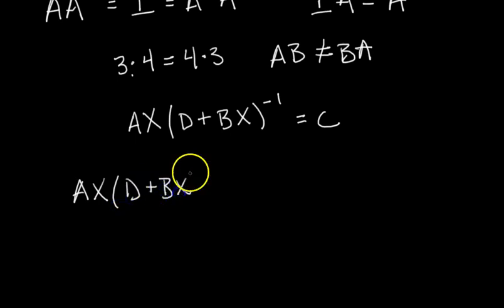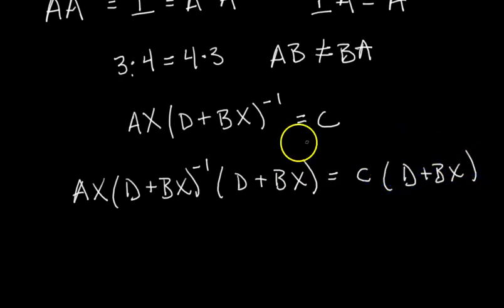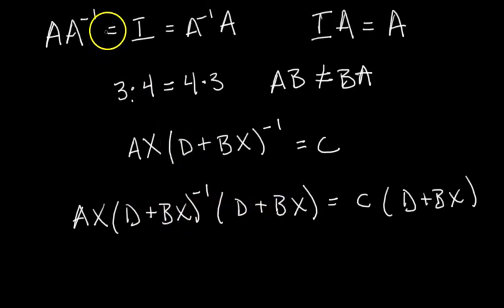And why am I doing that? Well, you can see here, if I do that, I have to do it to both sides. But interestingly, this here, this matrix is the inverse of this matrix, clearly. So an inverse times a matrix is going to just simplify to the identity matrix by this property up here, right?